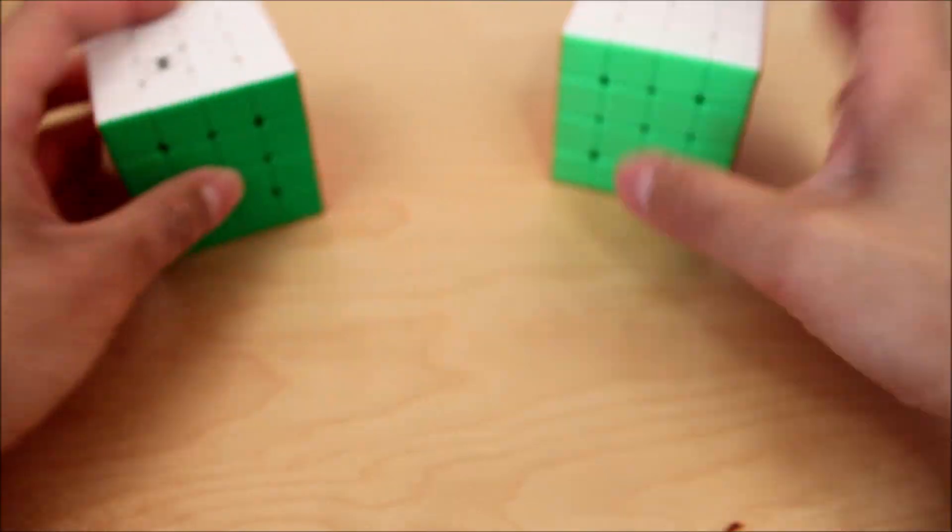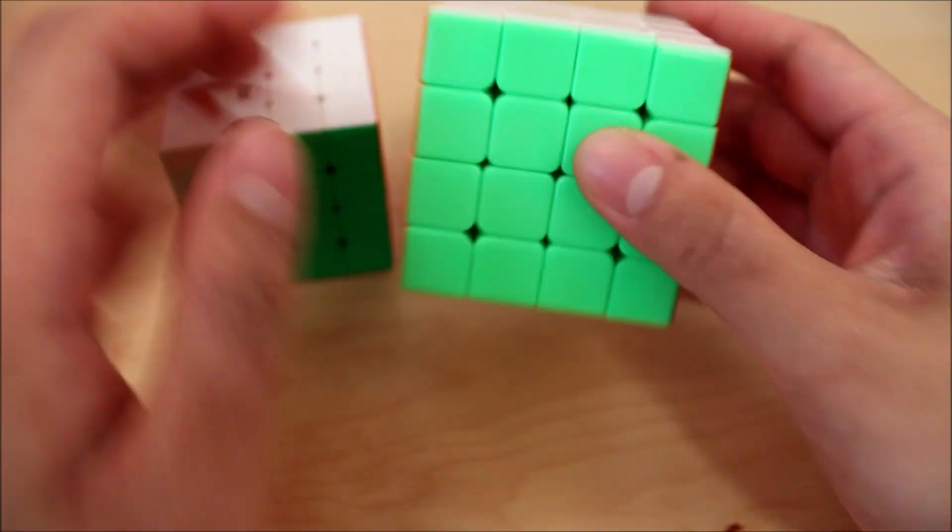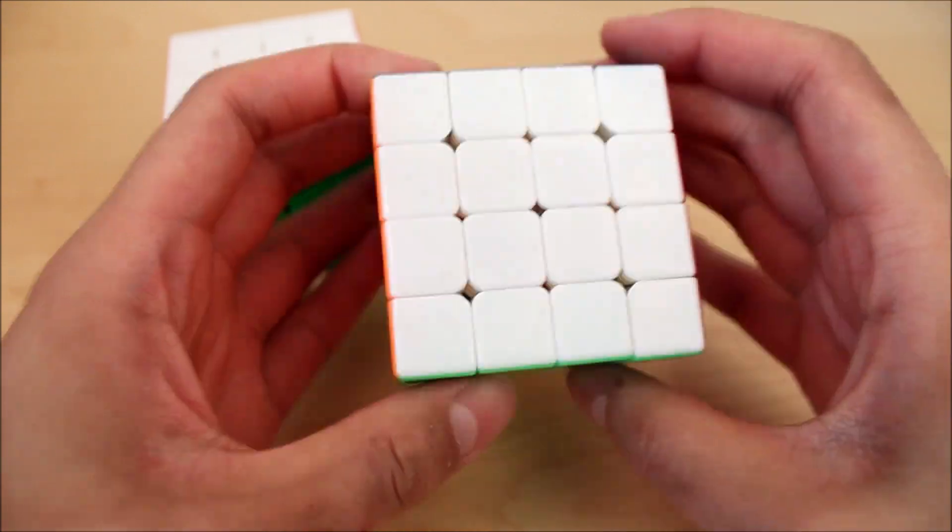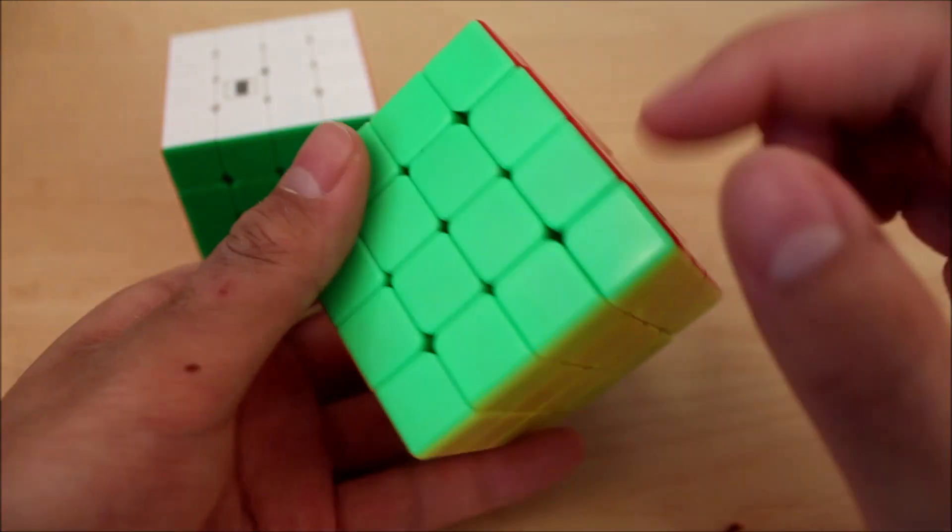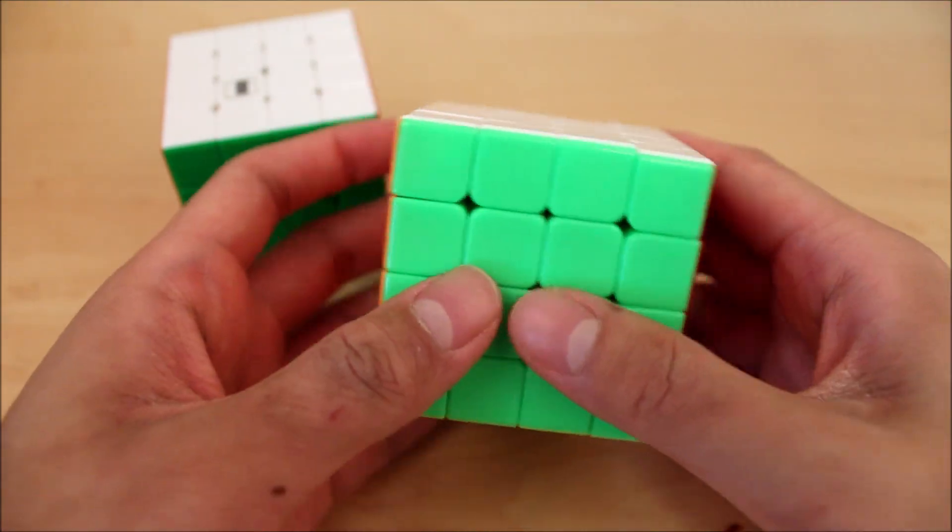Reverse here, reverse here. I do find that on the GTS-2M, it's a tiny bit better. Maybe it's the tensions, but I feel like the GTS-2 is a bit better with corner cutting and all that kind of stuff.